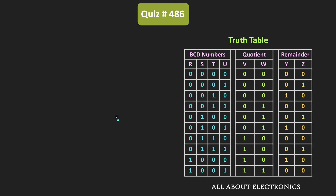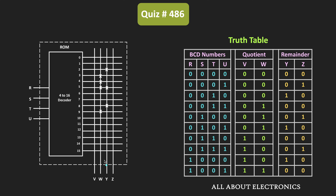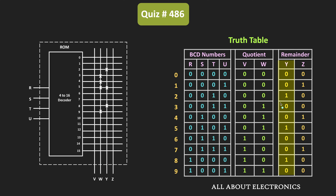Now, according to this truth table, we need to make the interconnections in the given ROM. We have already been given the interconnections for output W and Y. As you can see from this truth table, the W output is equal to 1 for inputs 3, 4, 5 and 9. The input combinations corresponding to 10 to 15 are the don't care conditions, and that is why they are not shown in the interconnections. Similarly, the output Y is equal to 1 for the 3 input combinations: 2, 5 and 8, and the same outputs are interconnected accordingly.